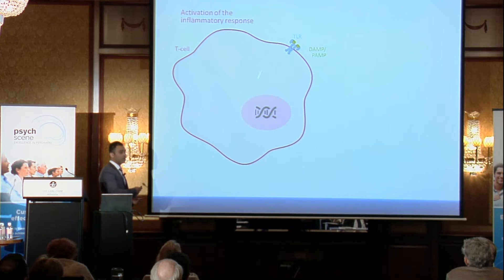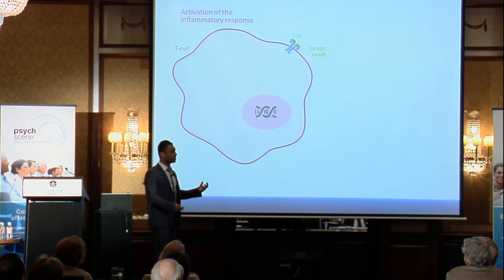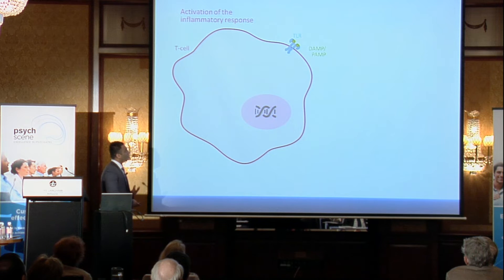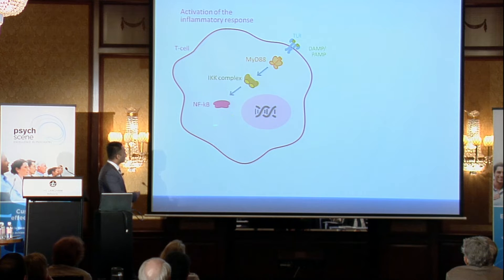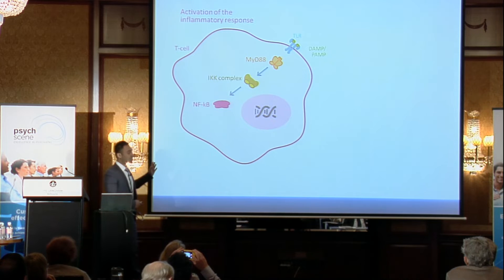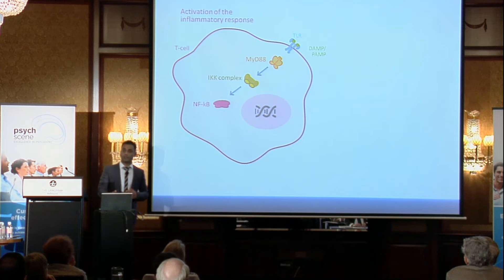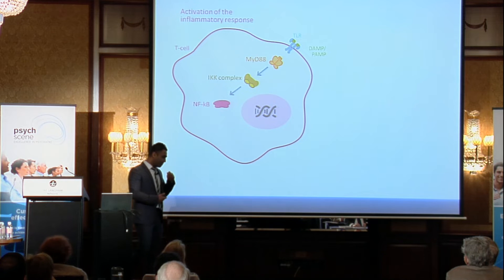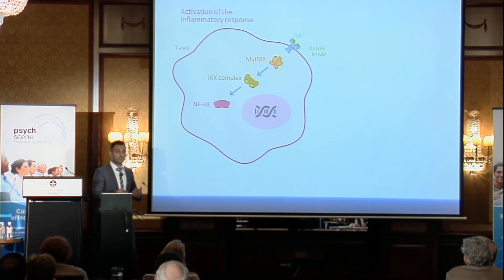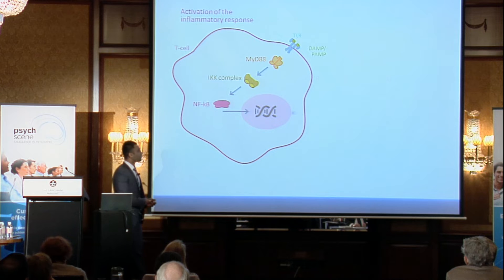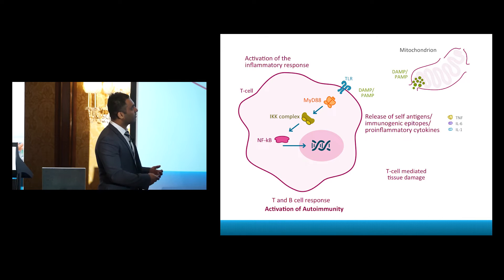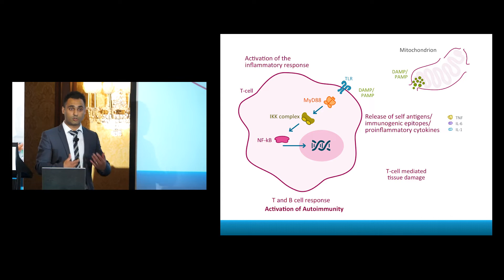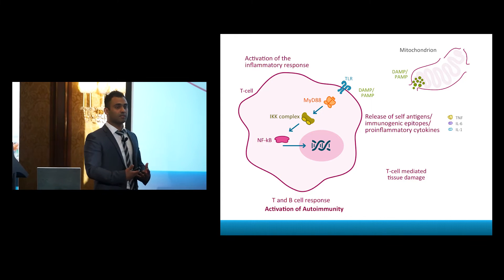Once that happens, DAMPs bind to toll-like receptors, and there is very good evidence for toll-like receptor involvement in psychiatric disorders. Once the toll-like receptor is activated, it sets off a cascade that ends with the enhancement of nuclear factor kappa-B (NF-κB) — the same factor that is also enhanced by lithium. If you search lithium and NF-κB in PubMed, you'll find many articles. NF-κB is a transcription factor that results in the release of several inflammatory cytokines, and these arise once there is T-cell-mediated tissue damage. The aim is to destroy the pathogen, but sometimes there is bystander damage to surrounding tissues as well.